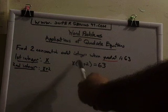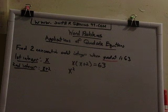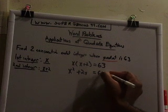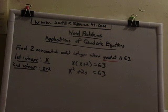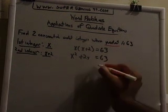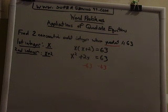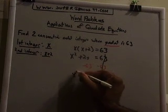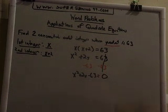Okay, and then now here we've got to distribute, so x times x gives you what? x squared plus 2x is equal to 63, so I need to subtract 63 from both sides. So I have x squared plus 2x minus 63. These cancel.